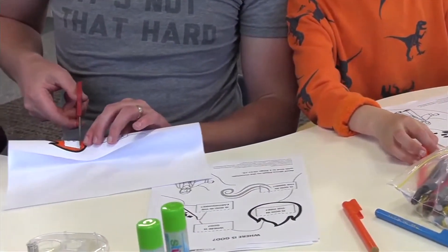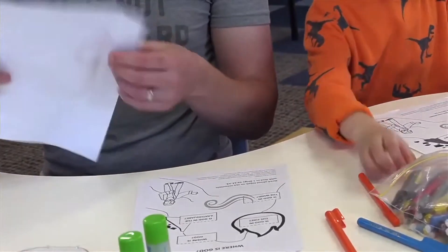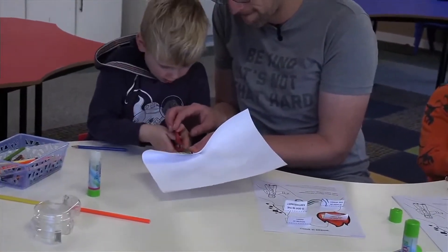So our next step once we've colored in is to cut out all the black lines on the page. Don't cut the dotted lines so that we can fold them up for our next step.